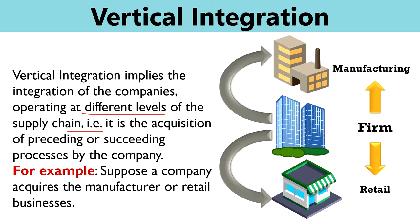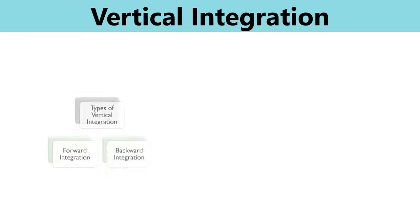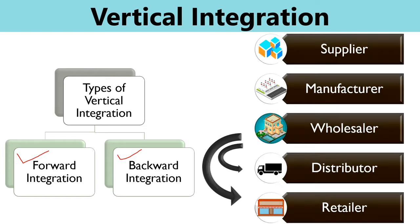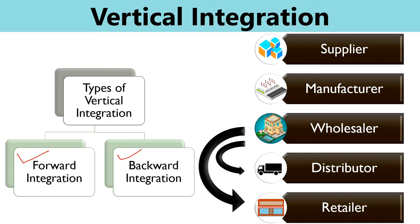For example, if a company acquires the manufacturer or retail businesses, such an integration is called vertical integration. It creates dominance of the company over the industry and increases self-sufficiency. In addition, it reduces the cost of production by eliminating markup at various levels and improves the operational efficiency of the concern. Vertical integration can be of two types: forward or downstream integration, and backward or upstream integration.